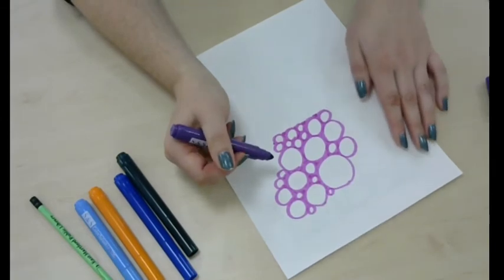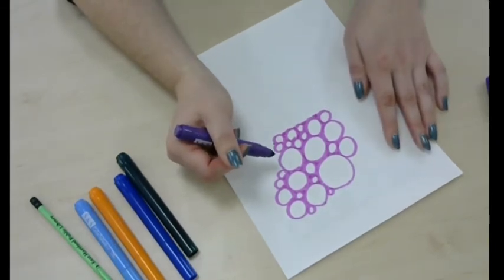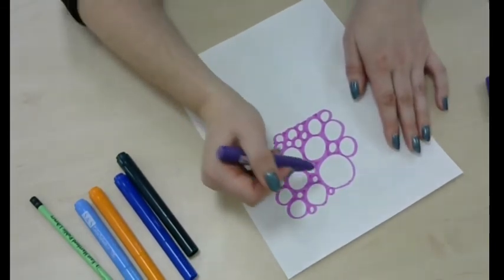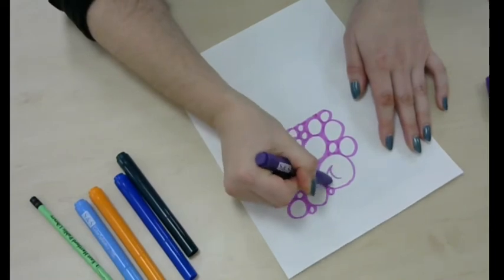Now, if you want an extra bubbly look, you can add a little curved triangle to some of the larger ones, so it looks like light reflecting off of them.